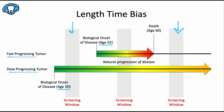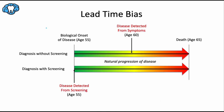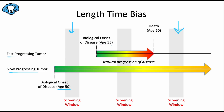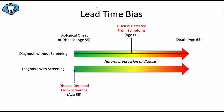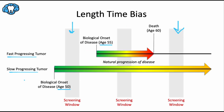In summary: lead time bias is the overestimation of survival duration due to earlier detection by screening, whereas length time bias is also an overestimation of survival duration but due to the relative excess of slowly-progressing cases being detected. The key mnemonic: lead time bias — the D in 'lead' is for Detection. Length time bias — the G in 'length' is for slowly proGressing. So D for detection and G for progression.